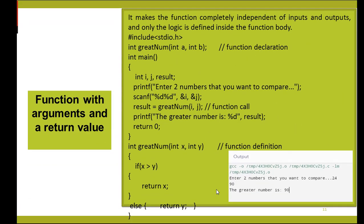Finally, function with arguments and a return value. This makes the function completely independent of input and output — only the logic is defined inside the function body. Declare a function with return type and arguments. Inside main, declare three variables: i and j for input and result for output. Display a message, input i and j, then call the function. When called, values of i and j are copied into x and y. If x > y, the function returns x; otherwise it returns y.